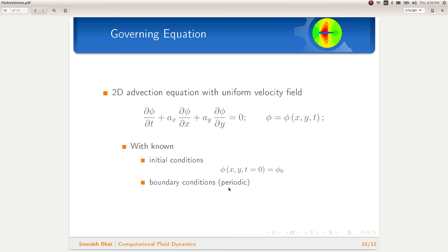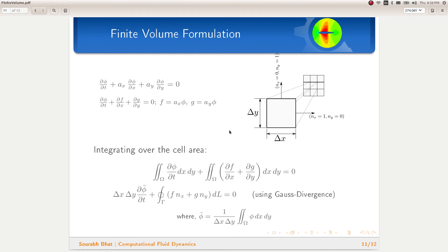That was the finite volume method. Now, let us use it to solve our problem at hand. We are interested in solving this simple 2D advection equation using a simple Cartesian mesh. This equation looks similar to the governing equation for which we have just obtained a finite volume formulation.